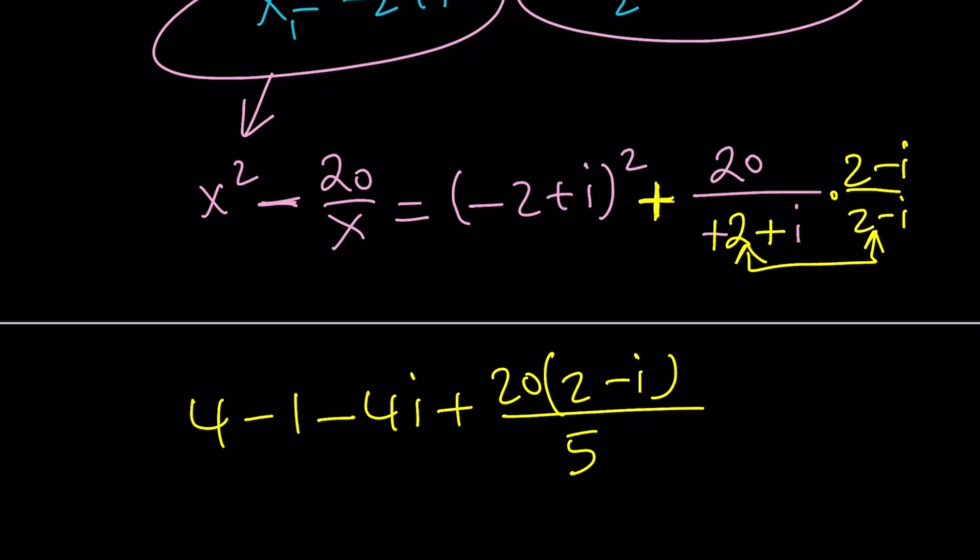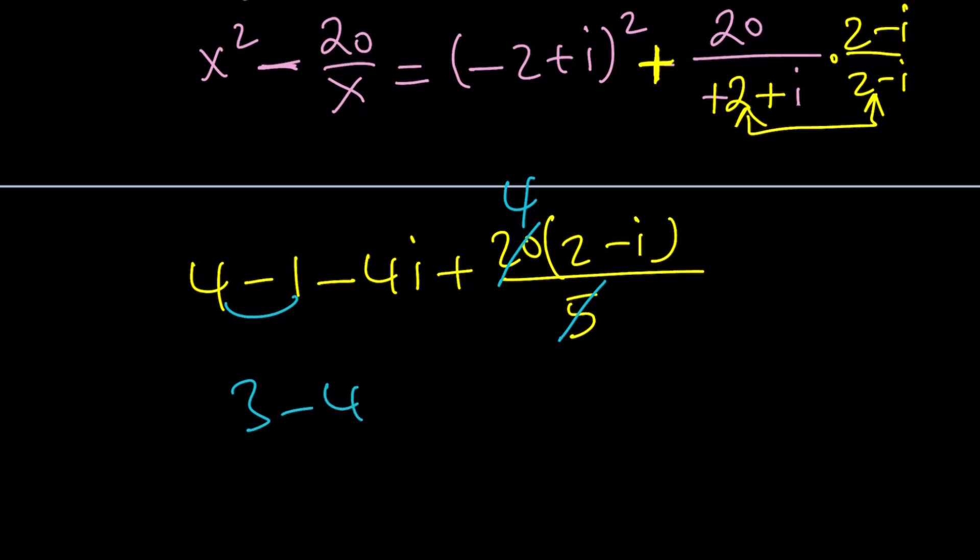That gives me 20 times 2 minus i divided by 5. We can divide 5 into 20 four times. This is 3 minus 4i. If you distribute the 4, 8 minus 4i.